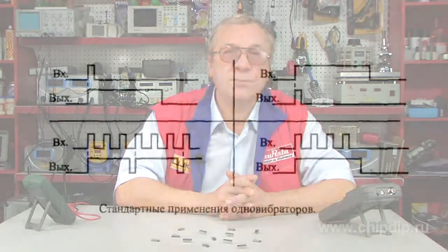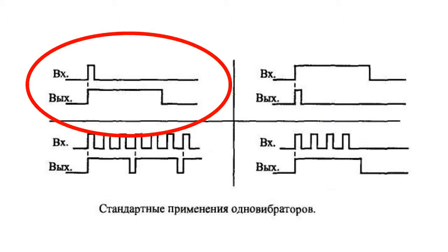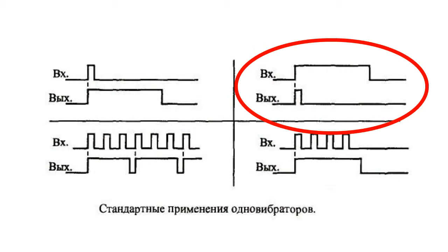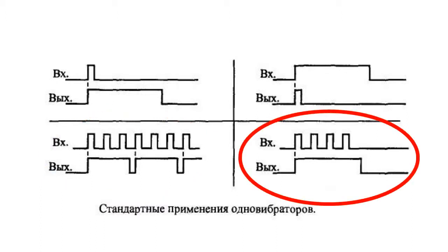The most widespread examples of applying single vibrators are: increasing the duration of the incoming impulse, decreasing the duration of the incoming impulse, dividing the frequency of the incoming signal by a set number of times, and forming the signal of the envelope of a sequence of incoming impulses.